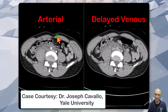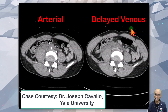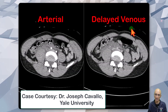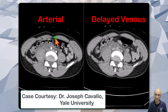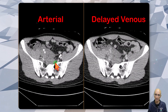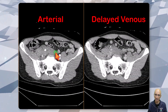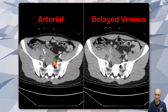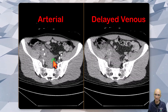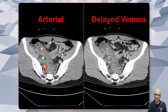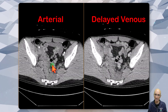I have arterial and delayed venous phase images. On the arterial phase images, as I scroll through, we can see a large retroperitoneal hematoma which is surrounding the iliac vessels on the right side.